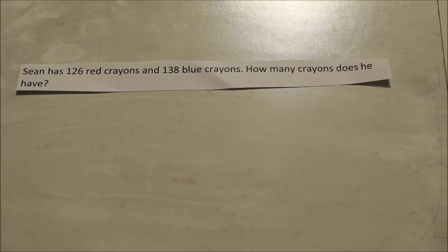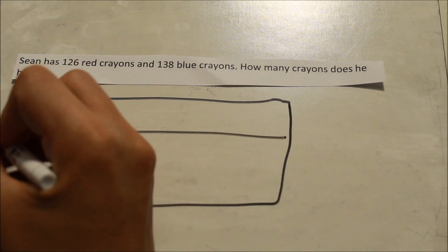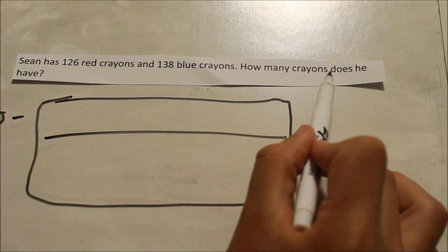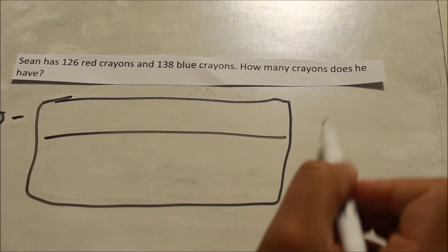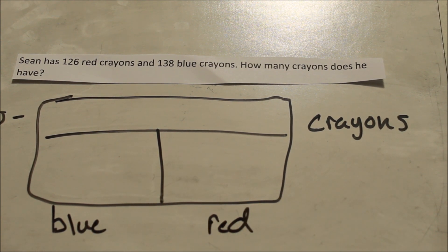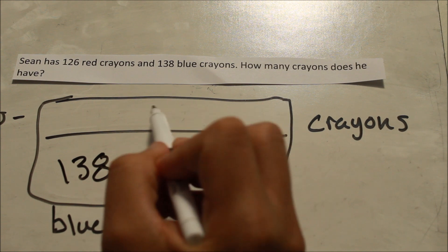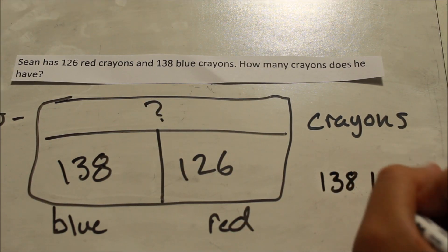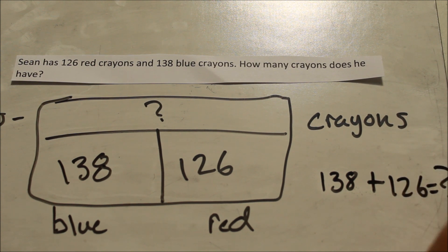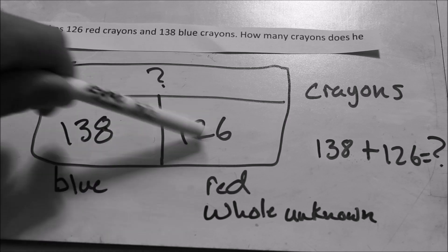Sean has 126 red crayons and 138 blue crayons. How many crayons does he have? This one is giving me two parts. How do I know? Because my whole is how many crayons he has total — not the colors. My part for red is 126, my part for blue is 138, and my whole is unknown. So: 138 plus 126 equals question mark. This problem is whole unknown because my whole is unknown but my parts are given.